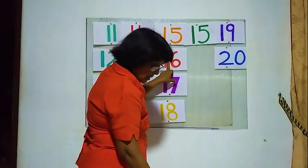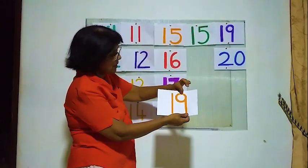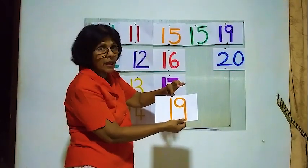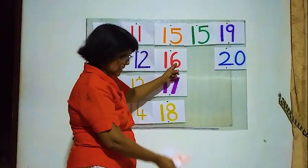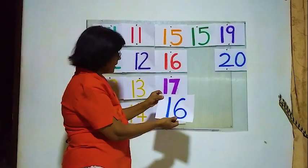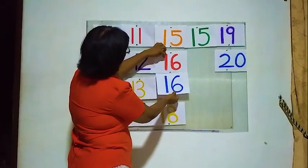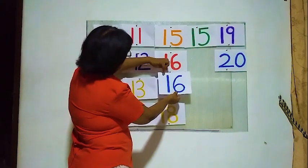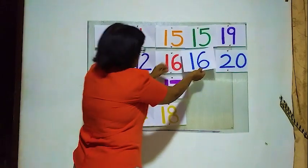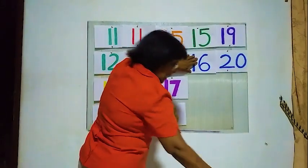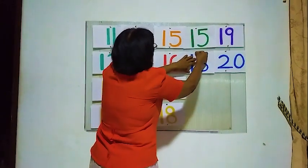Then what about this one? 1 and 6, this is 1 and 9 — is this correct? No. We are searching 1 and 6. You see this one — what about this? Is that correct? Yes! 1 and 6 — 16, here 1 and 6 — 16. This number is correct. We will paste it here. 16 — number 16.